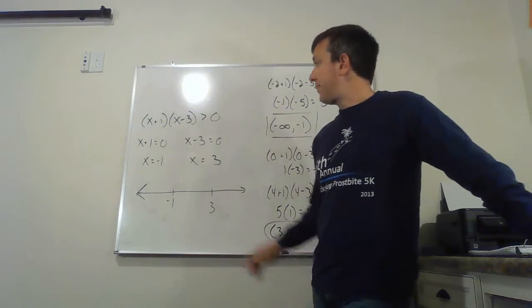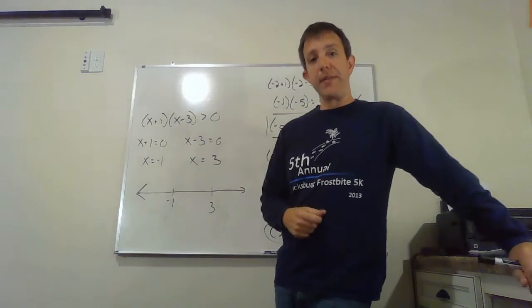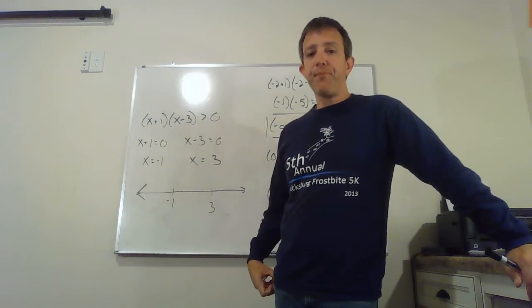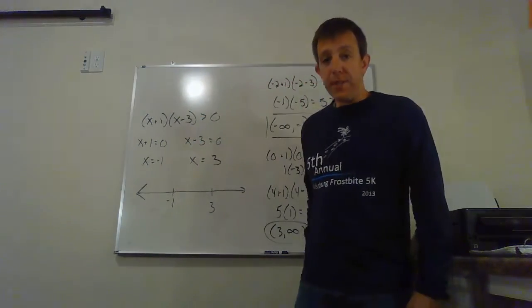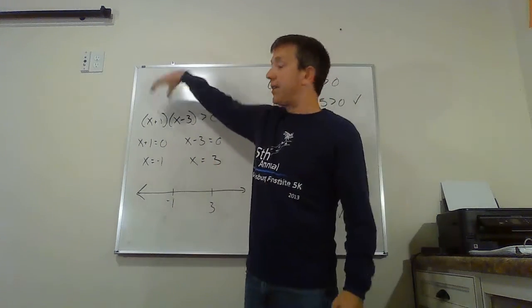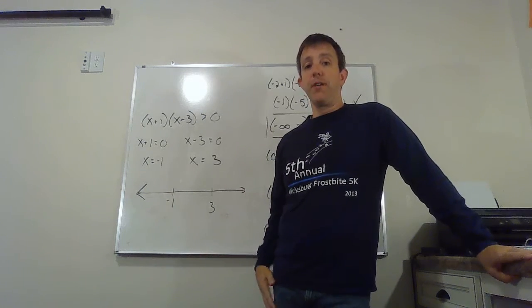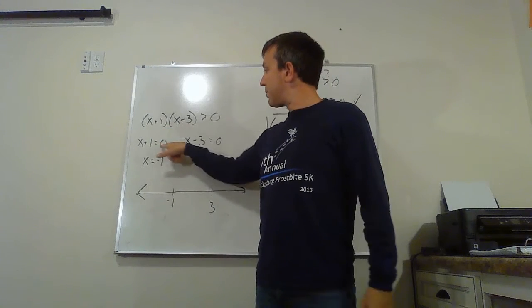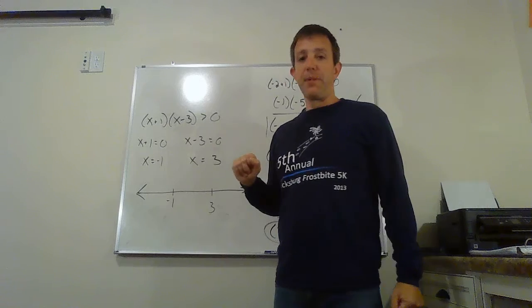Let's look at our first example. x plus three times x minus three needs to be greater than zero. This one's nice because it's already in factored form. The first thing we're going to do is try and find those zeros. So I need to find where it equals zero. Since I have two things multiplied together, the only way that happens is if one of those is actually zero. So x plus one can be zero, which gives me negative one. x minus three can be zero, which gives me three.